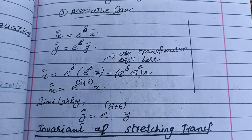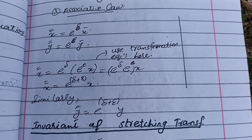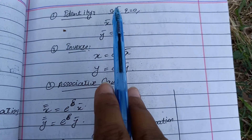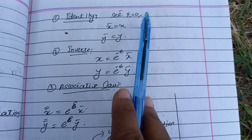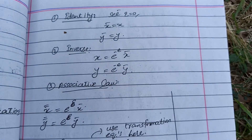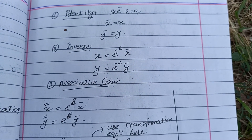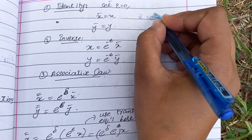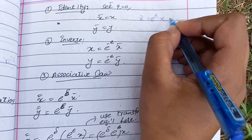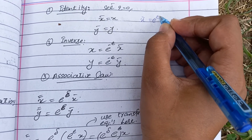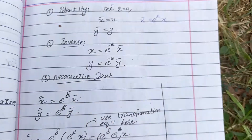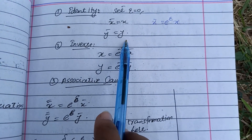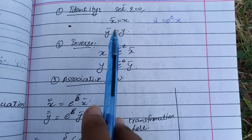The next target is identity. For identity, we substitute ε = 0 into the original transformation equations: x̄ = e^ε · x. Putting ε = 0 gives e^0 = 1, so x̄ = x. In the same way we get ȳ = y. So these are the identity transformations.